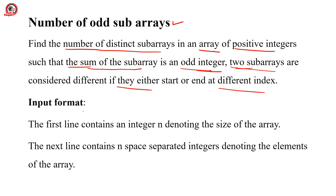The input format is very simple. There will be two lines. The first line contains an integer n denoting the size of the array, and the next line contains n space-separated integers denoting the elements of the array. In the output, we have to print the number of distinct subarrays such that the sum of the subarray is an odd integer.